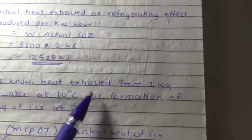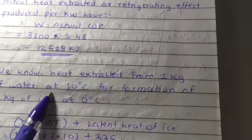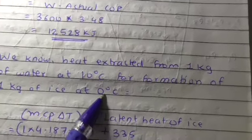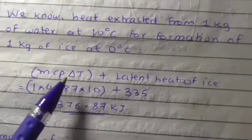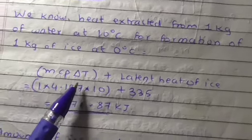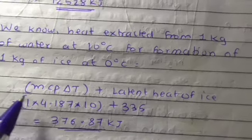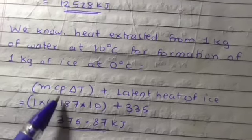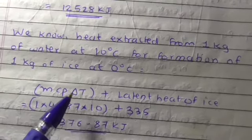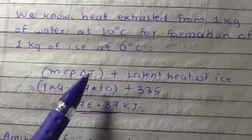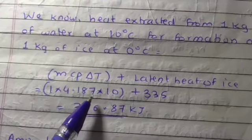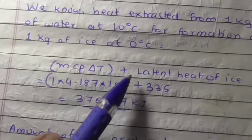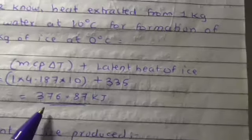Heat extracted from 1 kilogram of water at 10 degrees Celsius for formation of 1 kilogram of ice at 0 degrees Celsius: MCP delta T for heat removal plus latent heat of ice. Mass is 1 kilogram, CP of water is 4.187 kilojoules per kilogram Kelvin, delta T is 10, plus latent heat of ice is 335. The value is 376.87 kilojoules.